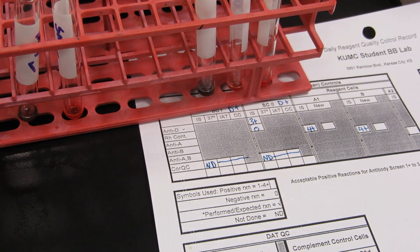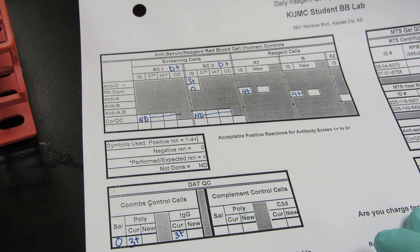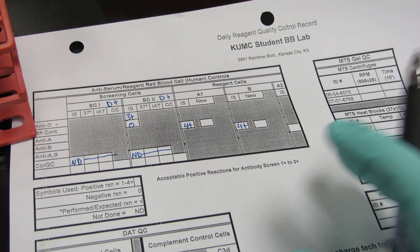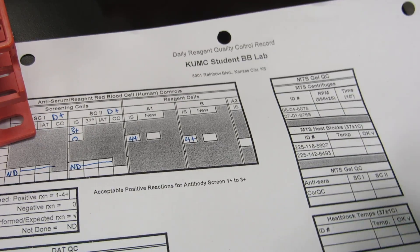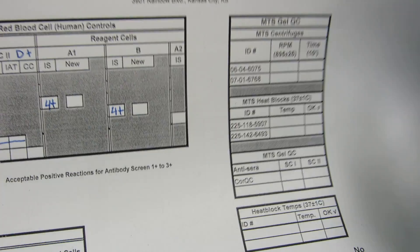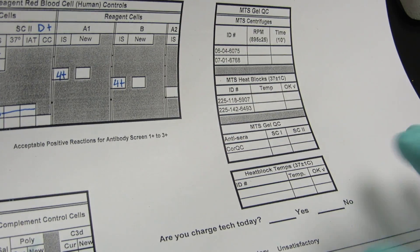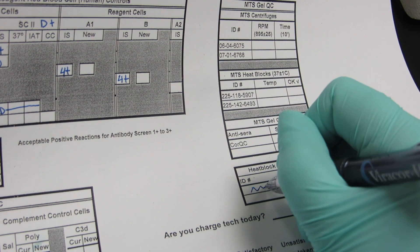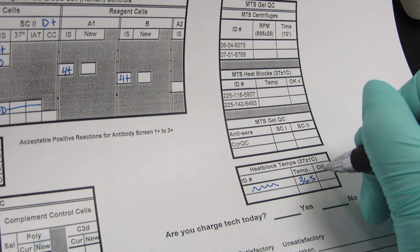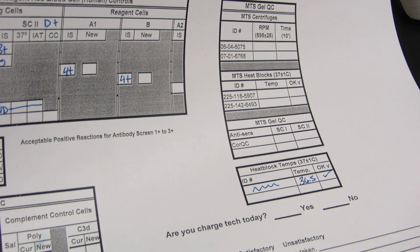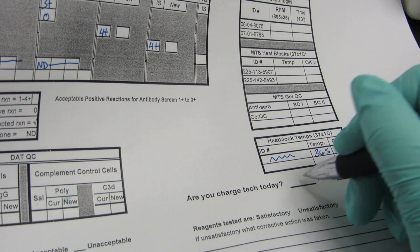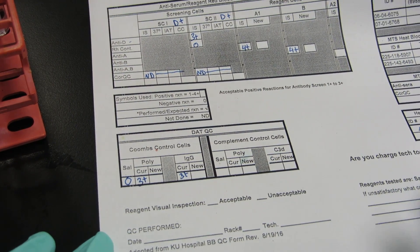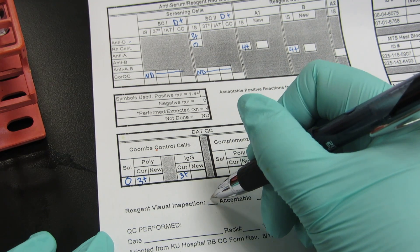We have graded all those reactions. As the semester goes on you may have more. You would do the complement side as well, but I'm not going to demonstrate that today because we don't have a ton of complement check cells. Over on the right is for gel QC — we are not there yet, but this is where you would put your QC for gel. You will have heat blocks to do weak D testing and any sort of incubation, so you would write the temperature down here and it must fall 37 plus or minus one — just mark a check if it's in range. Mark if you're the charge check for the day for your table. Visually inspect your reagents: did they look okay, were they growing anything funny or chunky?